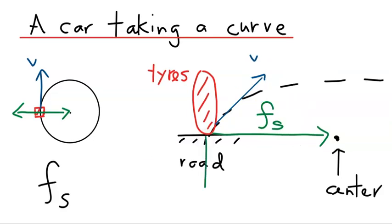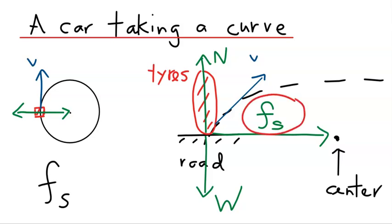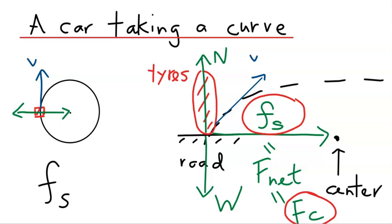One could label other forces on this car, namely the weight and the normal force — that's the free body diagram. But what is causing the net force is just static friction. So the net force is given by static friction, and that is the centripetal force. We say the static friction supplies the centripetal force in this case, and therefore maintains the car in its circular trajectory.